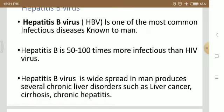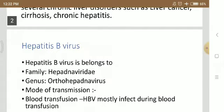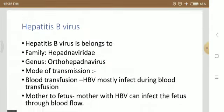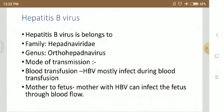Hepatitis B virus is widespread in man and produces several chronic liver disorders, such as liver cancer, cirrhosis, and chronic hepatitis. These chronic liver disorders may lead to liver damage and finally lead to liver failure. Hepatitis B virus belongs to the family Hepadnaviridae, genus Orthohepadnavirus.